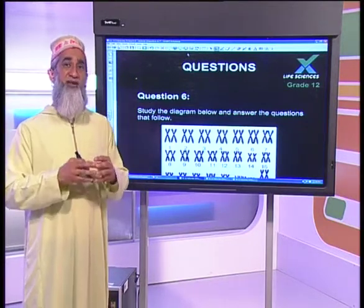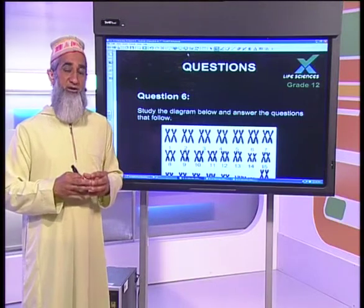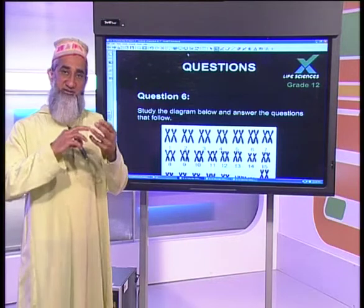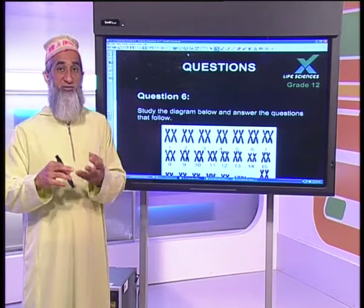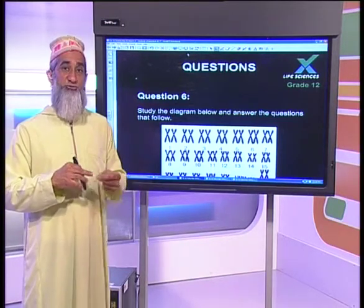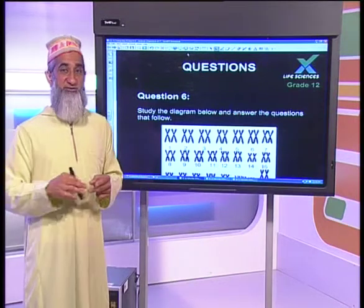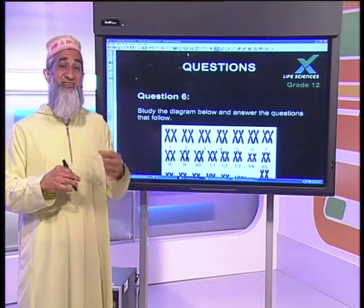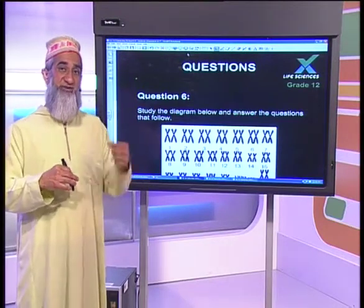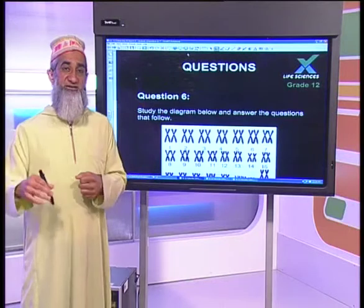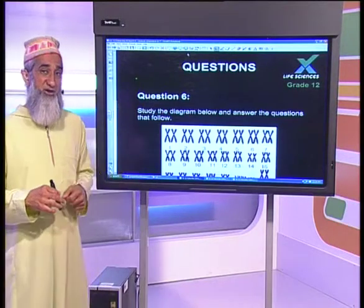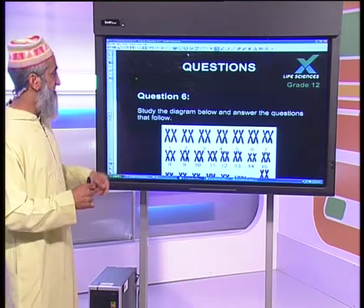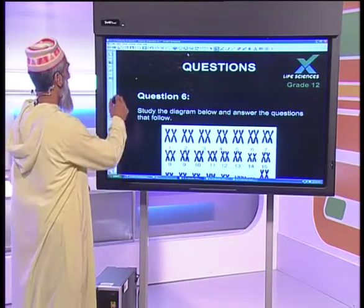Polyploidy is mainly used in the agricultural industry with plants. Many plants are polyploid because they have larger flowers and larger fruit — better for industry. They also become drought resistant, reducing crop loss. Many seedless varieties — seedless grapes, seedless watermelon — are all examples of polyploid organisms.